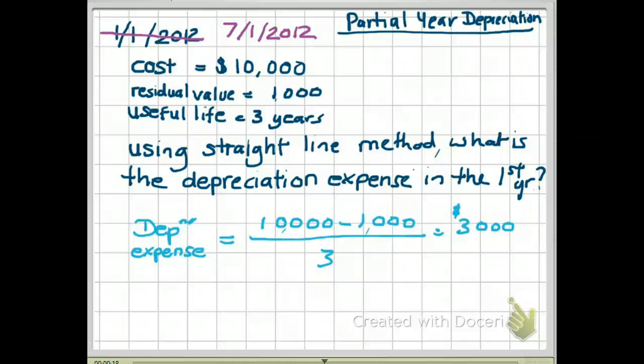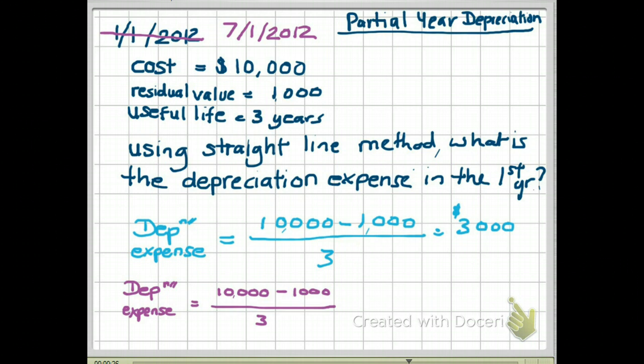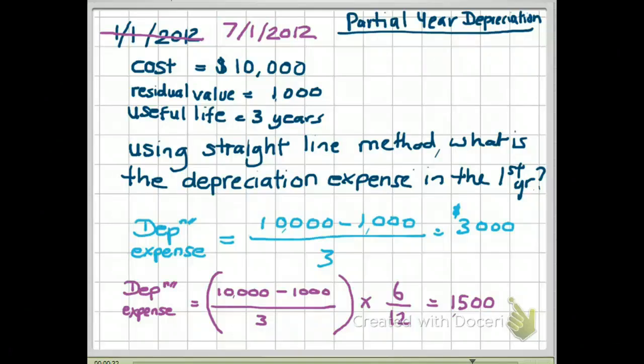So to calculate your partial year depreciation, what you do is you use the same method to calculate your full year's depreciation. So you take your $10,000 minus $1,000 divided by 3, but then you multiply that amount by 6 over 12, 6 months over 12 months, which gives you a depreciation expense of $1,500. So if we purchase this asset on July 1st, 2012, how much will be the depreciation expense in the first year? The answer is $1,500.